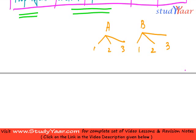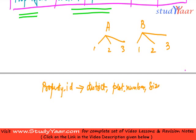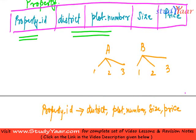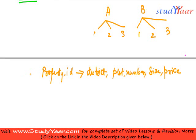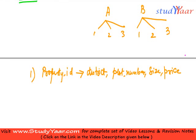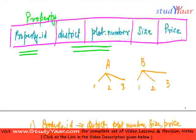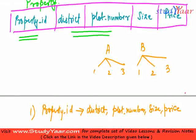I see that functional dependencies over here are property ID determines district, determines plot number, it determines size, and also it determines price. Since this is the primary key, this FD is true. For every candidate key, this is going to be true, so here it is going to be true.